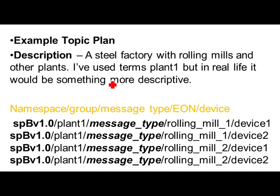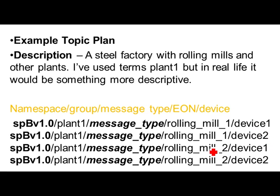Here is an example topic plan for a steel factory with some rolling mills. We divide groups into Plant 1, Plant 2, Plant 3. We have the namespace, the grouping — Plant 1 — the message type (birth, death, etc.), and then the edge-of-network node ID, which we'll call Rolling Mill 1, with Device 1 and Device 2 attached. Then another edge-of-network node, Rolling Mill 2, also with Device 1 and Device 2. Quite straightforward — I like the topic structure.